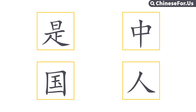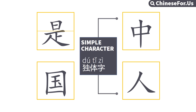And now we'll learn how to memorize the characters in a better way. 是 can be divided into the top and the bottom. 中 and 人 are simple characters — independent characters. In ancient times, people wrote 人 this way, just like a person with their arms down. 国 is a new construction for us — the outside and the inside.